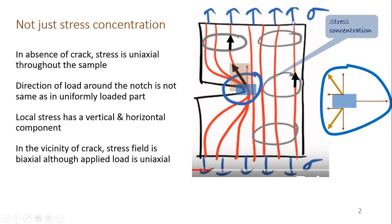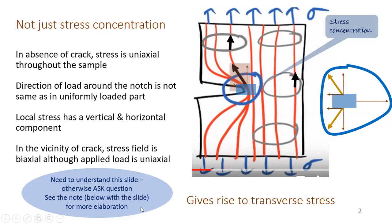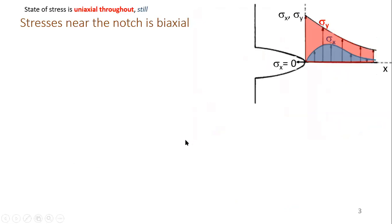So here the uniaxial stress has a large vertical component, and a horizontal component is generated near the notch. We have now seen two things: one is stress concentration, and the other is a transverse component of stress. Both things are generated near the discontinuity. Let us now repeat what we said in a different way: the state of stress is uniaxial throughout except near the stress raiser.